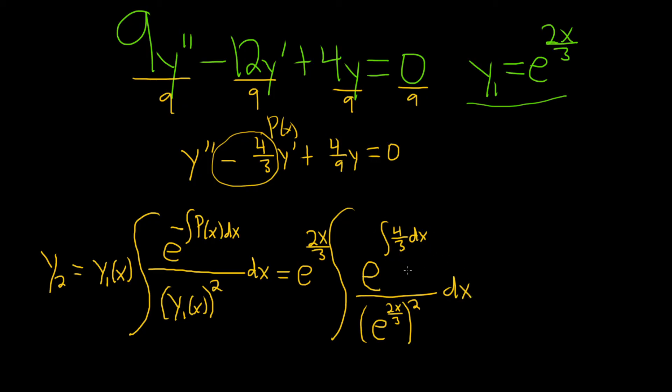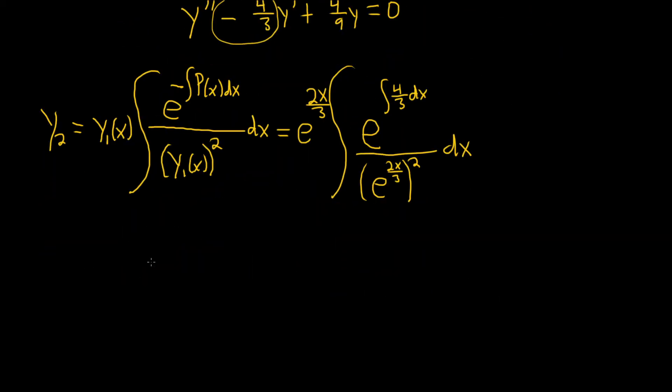It's a lot of integrals here. It's a lot of stuff going on, so you just got to be really careful. This is equal to e to the 2x over 3, integral. So now we can integrate the top piece. So that's just going to integrate to 4 thirds x. So it's e to the 4 thirds x.